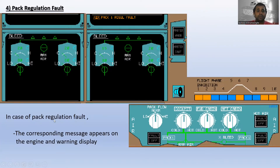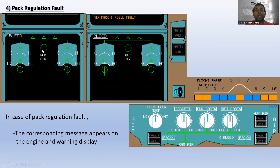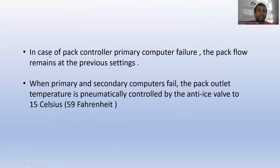In case of pack regulation fault, the corresponding message appears on the engine and warning display reading 'air conditioning pack one regulation fault.' No indication appears on the control panel or the bleed page system display. This occurs during flight phases one, two, six, eight, and nine.